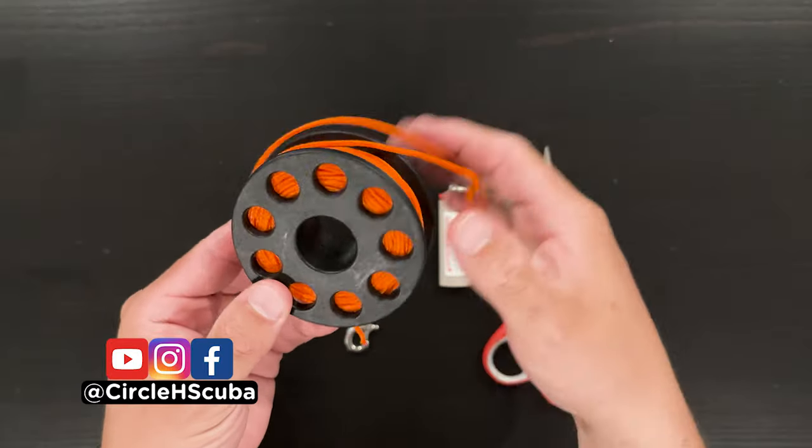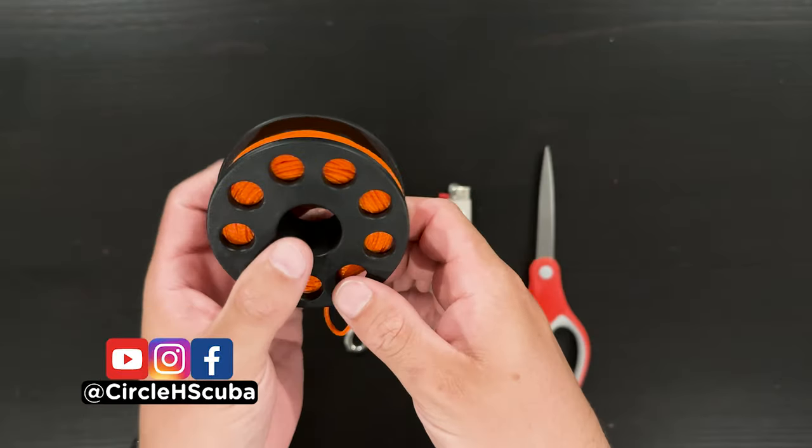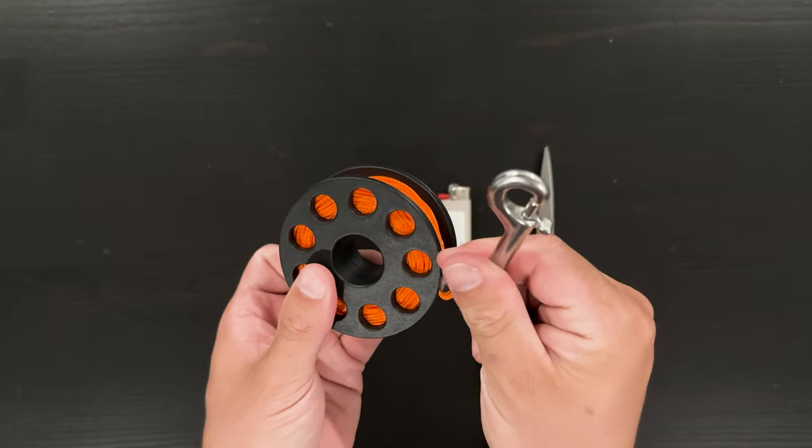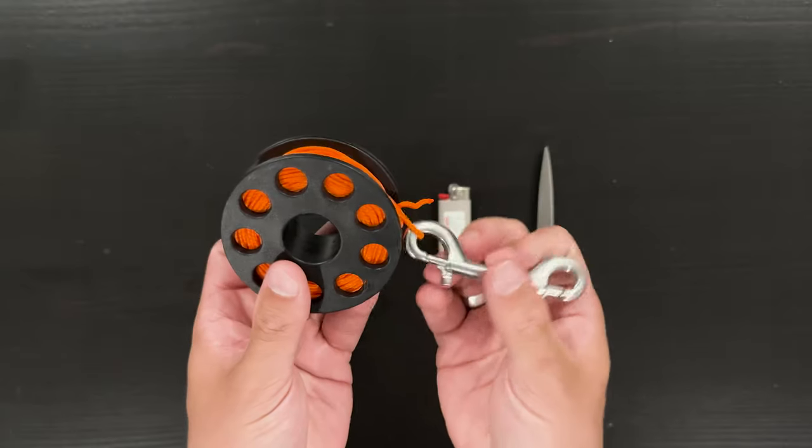Finger spools seem pretty simple on the outside. You have a metal or plastic spool, a couple holes to put your fingers in while holding the spool, some eyelet holes, the line itself, and then a double-ender that clips off to the finger spool or holds the line in place. However, when you first purchase a finger spool, there's a little bit of prep work that's needed to get it ready for use.